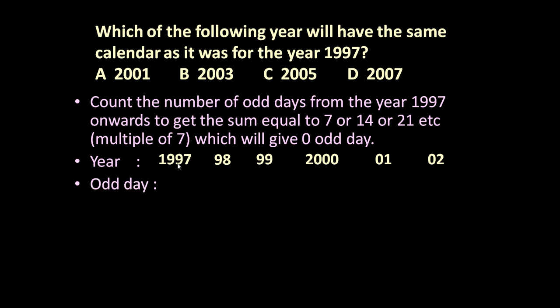1997 is an ordinary year, meaning 365 days. 365 days means 52 weeks plus one extra day - that one extra day is called an odd day. 1998 is again an ordinary year, so it will have one odd day. 1999 is again an ordinary year, so it will have one odd day.